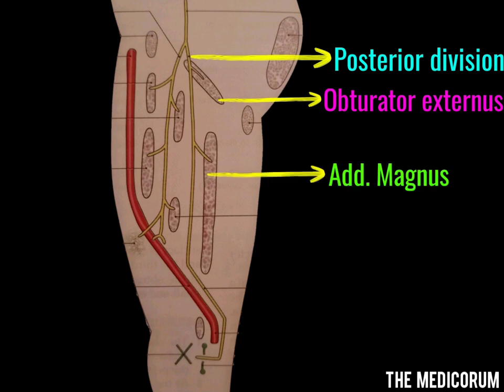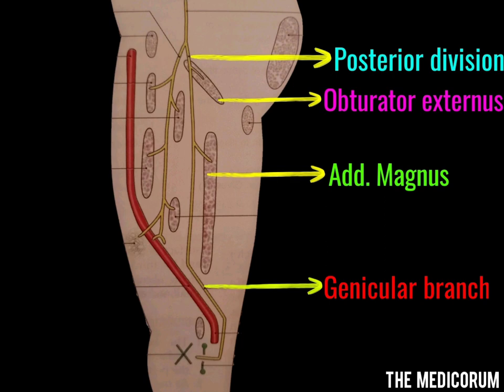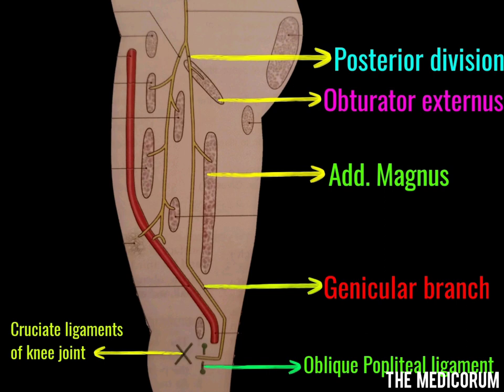In the adductor canal, the posterior division is reduced to a thin genicular branch. This genicular branch enters the popliteal fossa and pierces the oblique popliteal ligament, as seen in the diagram. It then goes on to supply the cruciate ligaments of the knee joint and some of the joint capsule.